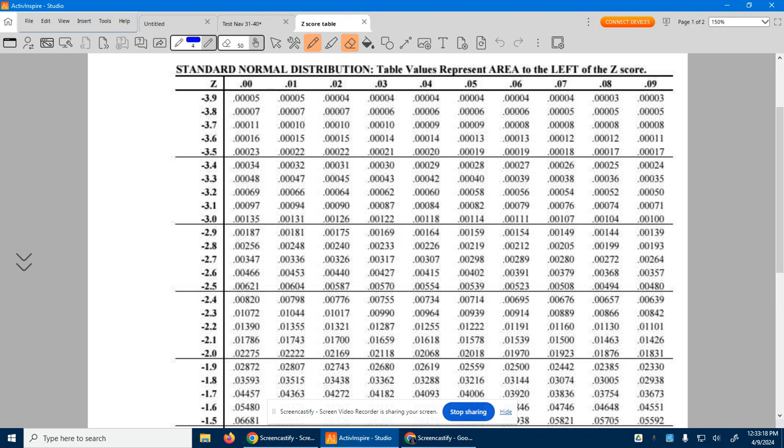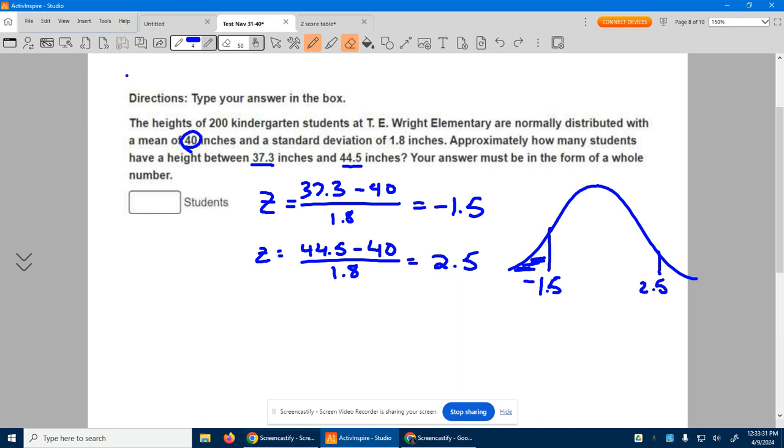So z-score table, negative 1.5. It's a negative, perfect negative 1.5, which is this value right here that you see, 0.06681. So we have 0.06681. So basically 6.681% of people are to the left of that curve that we don't want.